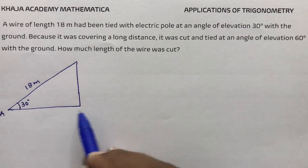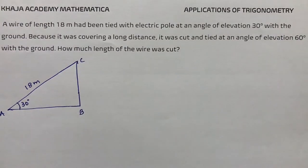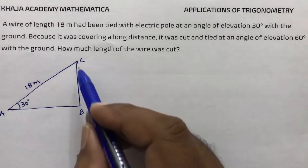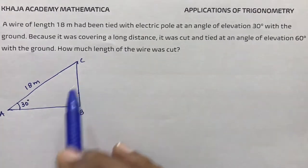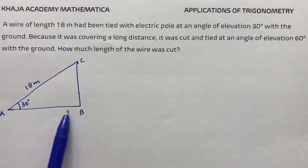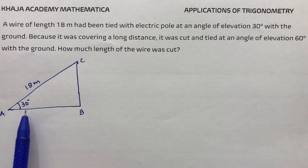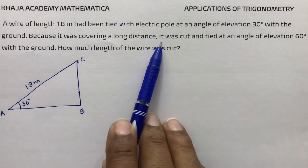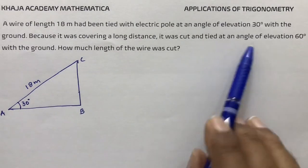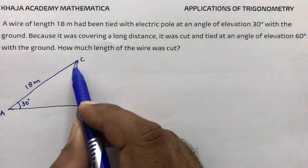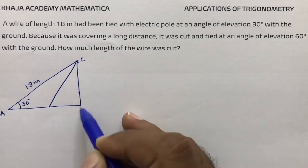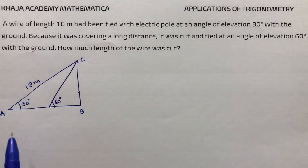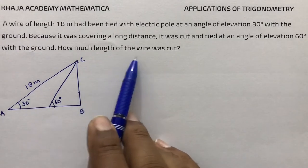Here AC is the wire with length 18 meters and BC is the electric pole. Because it was covering a long distance, the wire has been cut and tied at an angle of 60 degrees with the ground. How much length of the wire was cut?